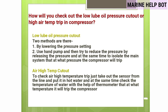How to check low lube oil pressure cutout: either lower the pressure setting, or use a hand pump and reduce pressure by releasing it while isolating the main system to observe at what pressure the compressor trips. How to check air high temperature trip: remove the sensor from the line, place it in hot water, and simultaneously check the water temperature with a thermometer to observe at what temperature the compressor trips.